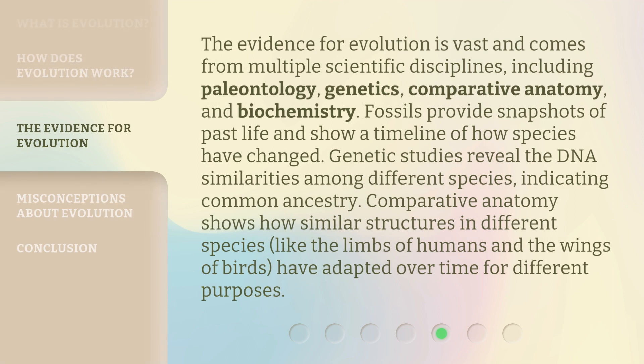The evidence for evolution is vast and comes from multiple scientific disciplines, including paleontology, genetics, comparative anatomy, and biochemistry. Fossils provide snapshots of past life and show a timeline of how species have changed. Genetic studies reveal the DNA similarities among different species, indicating common ancestry. Comparative anatomy shows how similar structures in different species, like the limbs of humans and the wings of birds, have adapted over time for different purposes.